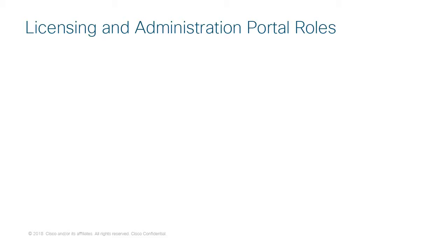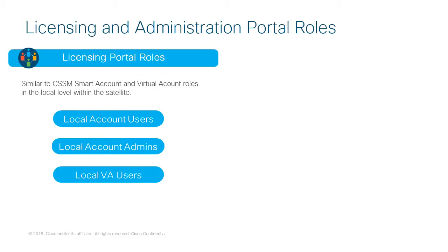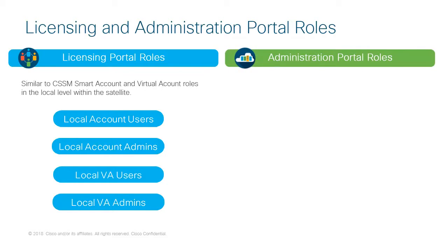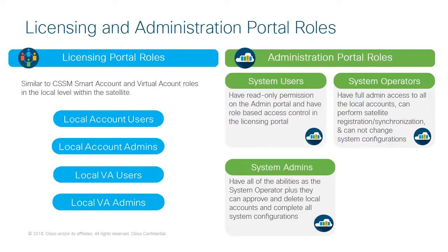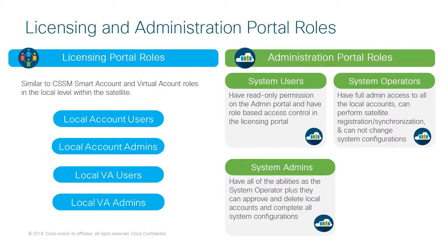There are different roles users can have within the licensing and administration portals. In the licensing portal, system users can be assigned the roles of local account user, local account administrator, local virtual account user, and local virtual account administrator — functioning similarly to Smart Account and Virtual Account on Cisco SSM but at the local level. Within the administration portal, users can be system administrators, system operators, or system users. System users have read-only permission on the administration portal. System operators have full admin access to all local accounts and can perform satellite registration and synchronization, but cannot change system configurations. System admins have all the abilities of a system operator, plus they can approve and delete local accounts and configure IP addresses, syslog, and proxy for the satellite.